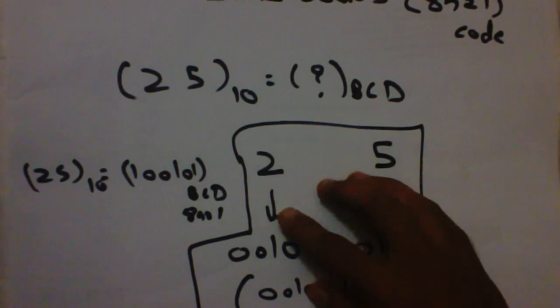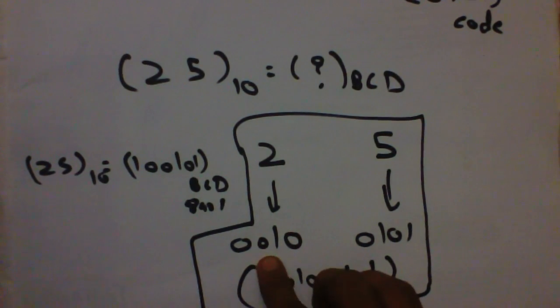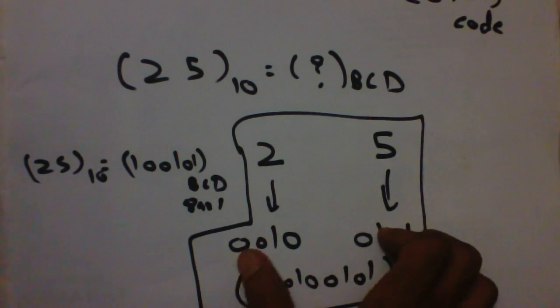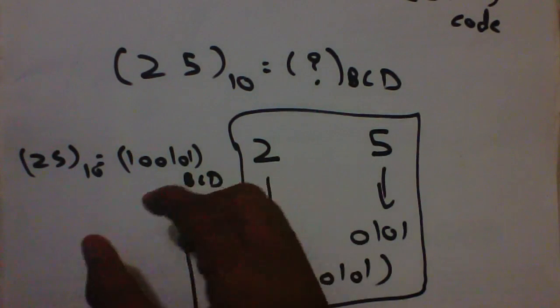Each decimal number is converted into equivalent 4-digit binary number and then written in a single way.